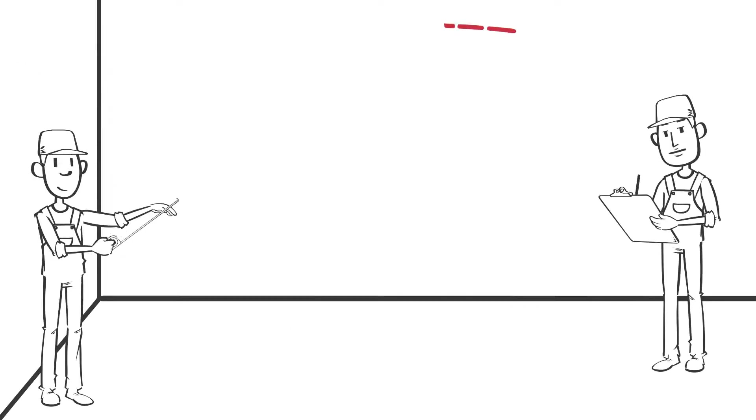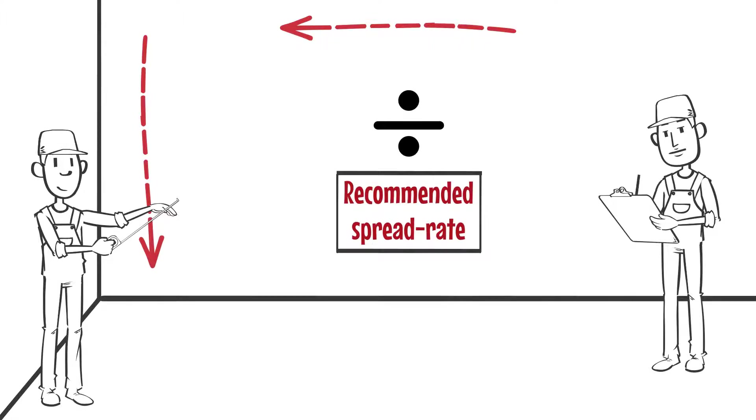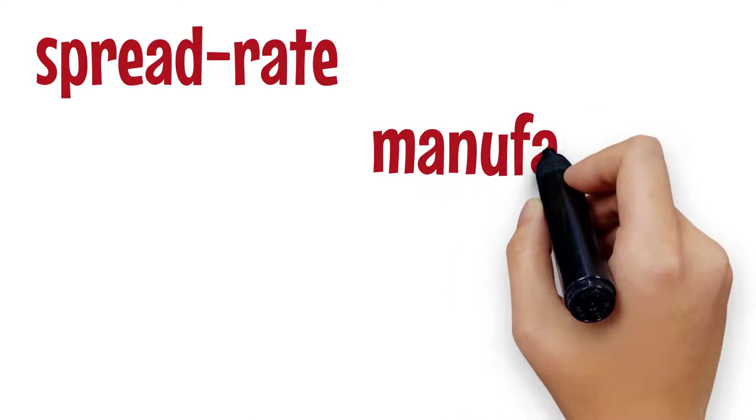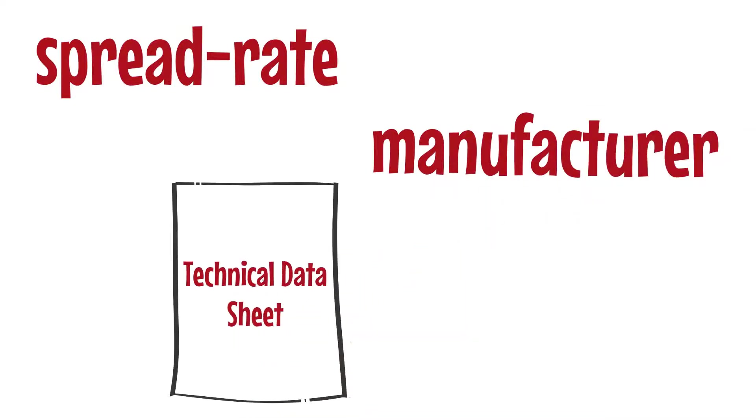First, work out the total number of square meters you need to coat and divide by the recommended spread rate. The spread rate will be specified by the manufacturer in the technical data sheet.